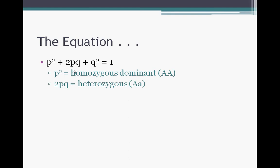2pq, the second little section after the plus sign, that's the heterozygous. That's big A, little a. Then after the second plus sign, the q² is the homozygous recessive, little a, little a.